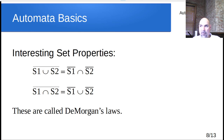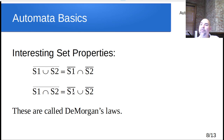Here are some interesting set properties. If you take the complement of S1 ∪ S2, that's equivalent to the intersection of the complement of S1 with the complement of S2. And it works the other way too: the complement of S1 ∩ S2 is equivalent to the complement of S1 unioned with the complement of S2. These are called De Morgan's laws. We'll come back to those later. It's a pretty useful result that allows us to convert unions into intersections or intersections into unions, and in certain cases that can make things easier.